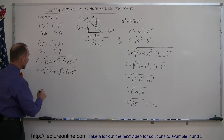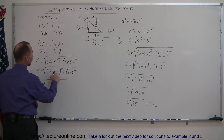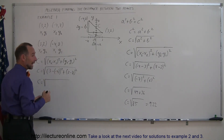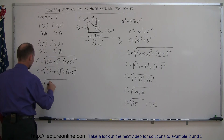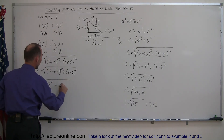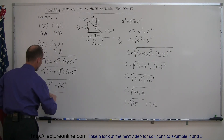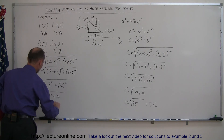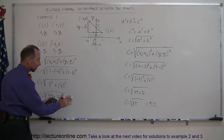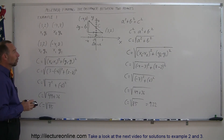So C equals the square root of (3 minus (minus 4)) squared plus (2 minus 8) squared. Subtracting a negative is like adding a positive, so that's 3 plus 4, which is 7 squared, plus (minus 6) squared. C equals the square root of 49 plus 36, which means C equals the square root of 85 — the exact same answer as before. So you can see it doesn't matter which way you label your points.